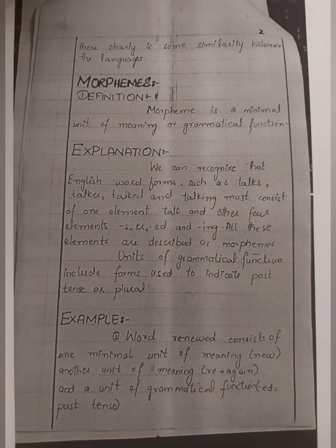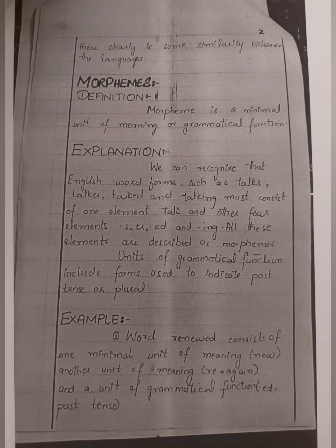For explanation, consider the English word forms: 'talks', 'talker', 'talked', and 'talking'. These must consist of one element: 'talk'. The 's', 'ed', and 'ing' are other elements — so four elements are formed. The stem morpheme is 'talk', and by adding derivational or inflectional morphemes we get additional elements. All of these elements are described as morphemes. Units of grammatical function include forms used to indicate past tense, plural — past tense uses 'ed', plural uses 's', and continuous form uses 'ing', which also serves as a gerund form.